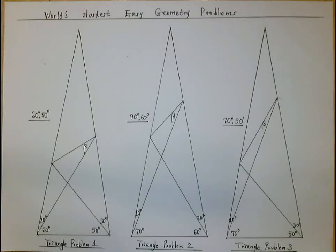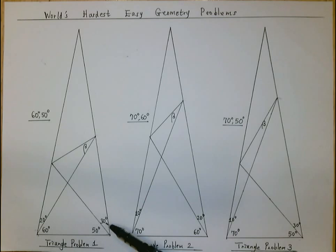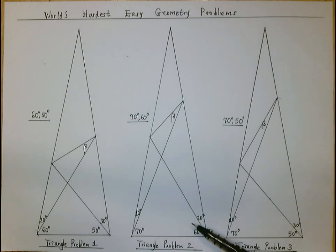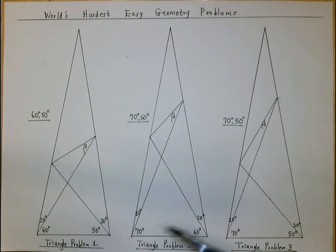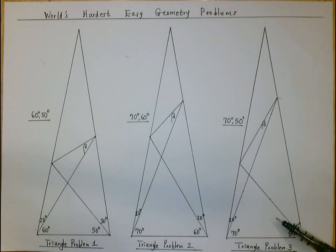In this video we need to solve the world's hardest easy geometry problems. These problems generate a lot of interest among high school students and readers who enjoy mathematical challenges. Triangle number one is the original problem. Triangle number two is a variation problem. These two problems are very popular over the internet. In this series of videos, in addition to solving problems number one and number two, we will also solve problem number three using elementary geometry skills and concepts.